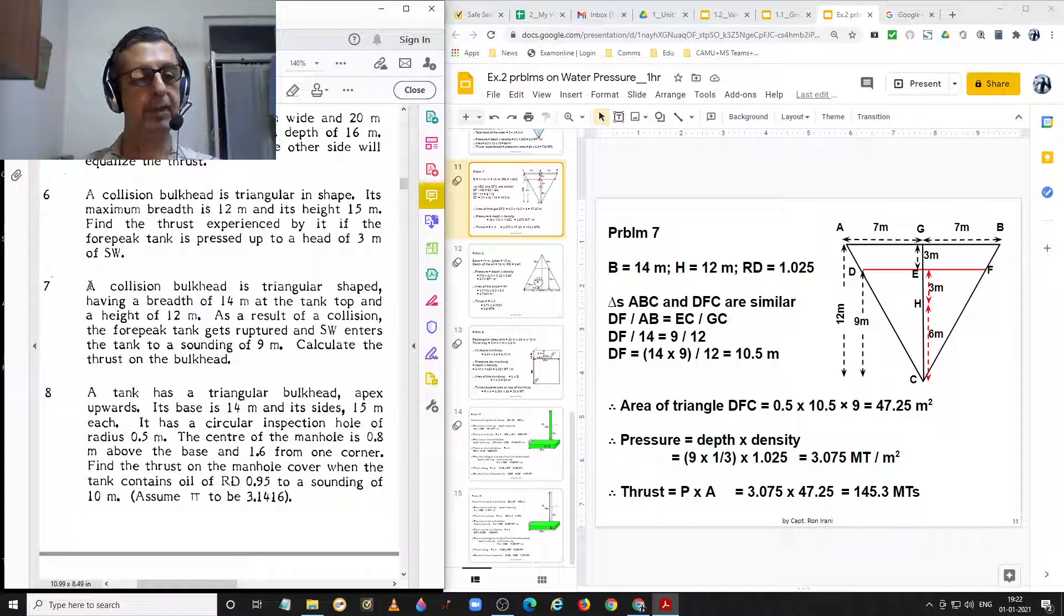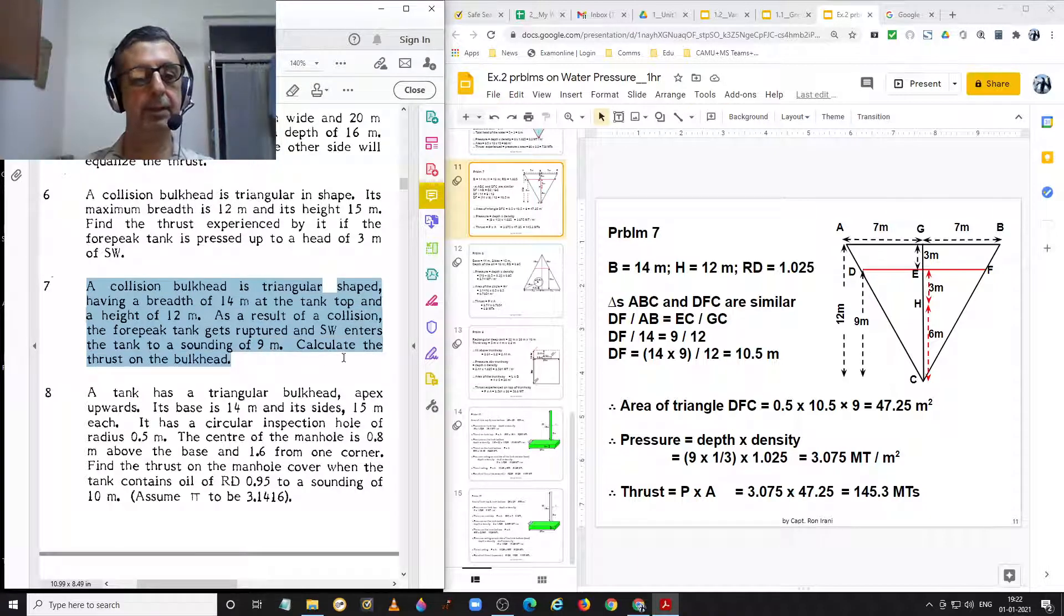Problem number 7. It states that a collision bulkhead is triangular shaped, having a breadth of 14 meters at the tank top and a height of 12 meters. As a result of a collision, phobic tank gets ruptured and salt water enters the tank to a sounding of 9 meters. Calculate the thrust on the bulkhead.